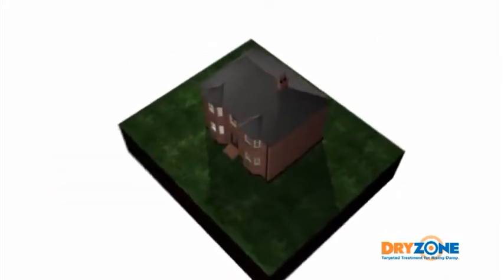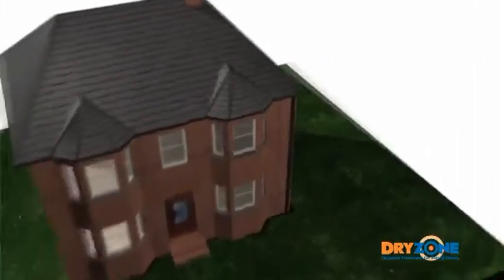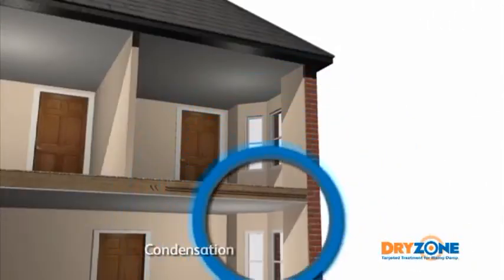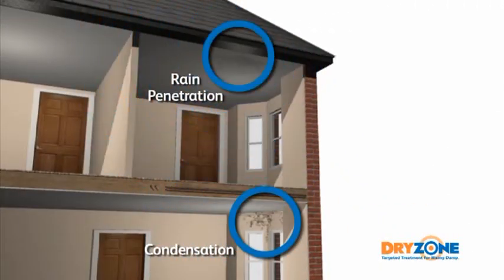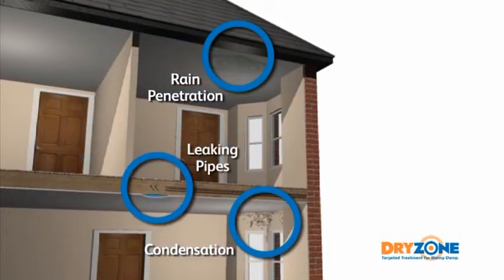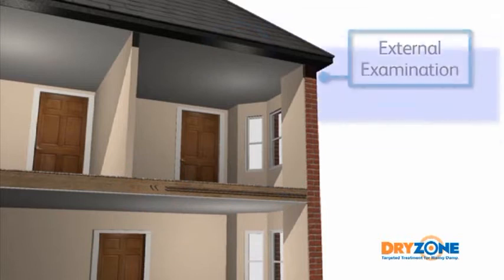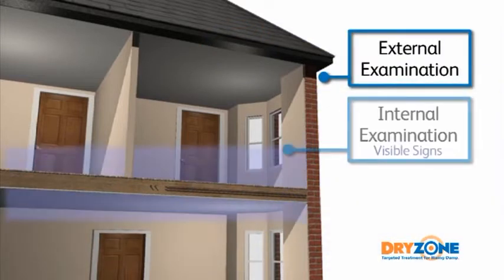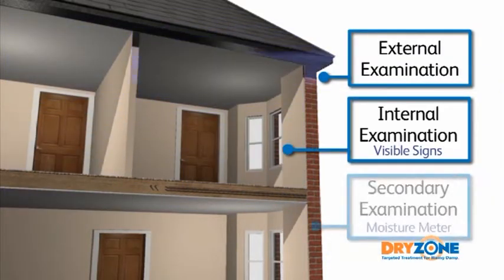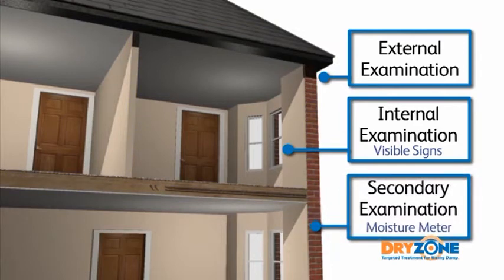Many houses suffer from dampness in one form or another. Condensation, rain penetration and leaking water pipes are very common and should not be confused with rising damp. A proper diagnosis to determine the source of dampness must be carried out before the correct remedial action can be taken.